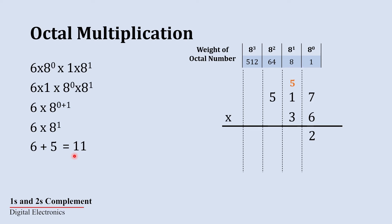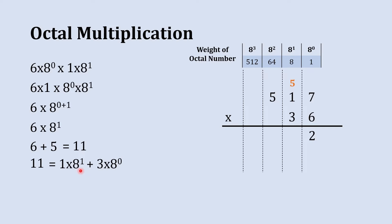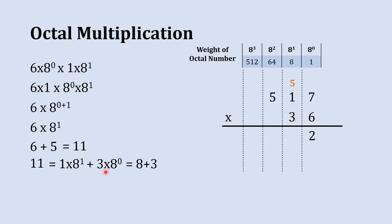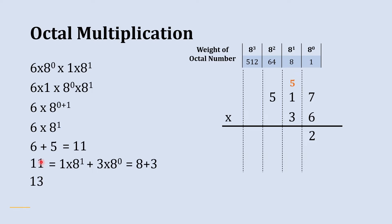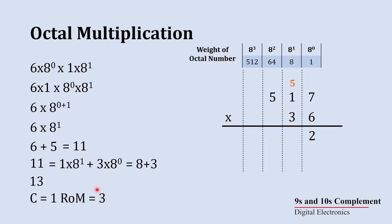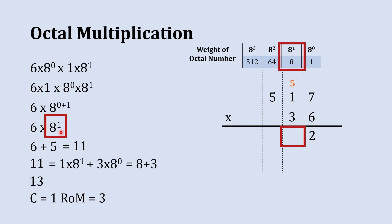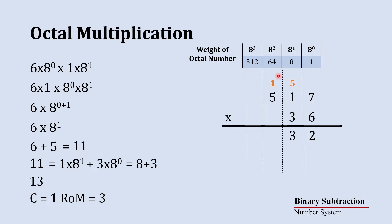Now this 11 is a decimal number, so we convert it into octal. 1 into 8 raise to 1 plus 3 into 8 raise to 0 gives us 8 plus 3, which is 11. So its octal equivalent is 13 — 1 in the 8's place and 3 in the 1's place. Here, 1 will be carry forwarded to the next column and 3 will be written at the 8 raise to 1's place.